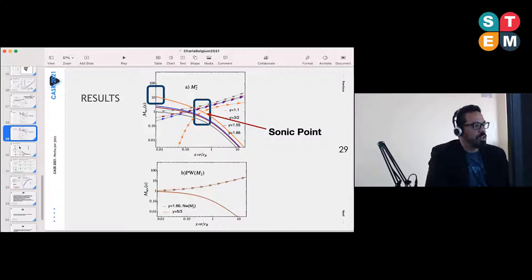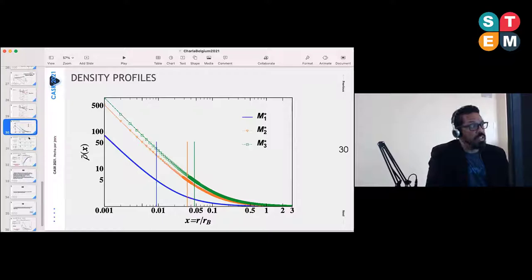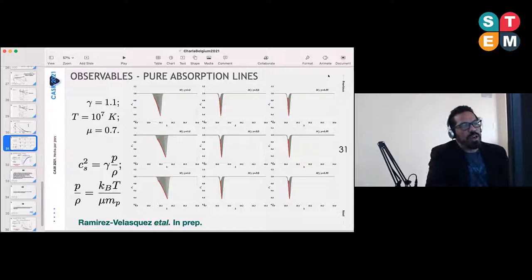Only to show you how the density profiles look like depending on the fraction of the UV and X-ray shining upon the gas. There are differences there which are basically reflected on, for instance, the profile of absorption lines shown here in this example.